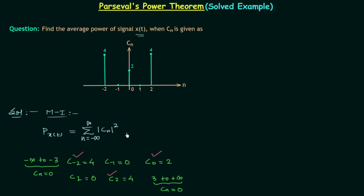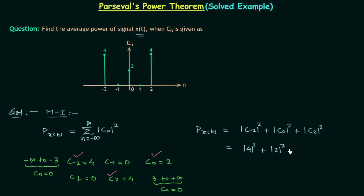Using the Parseval's theorem formula, the average power of x(t) equals |c_{-2}|² + |c_0|² + |c_2|². Since c_{-2} = 4, c_0 = 2, and c_2 = 4, we have |4|² + |2|² + |4|² = 16 + 4 + 16 = 36 watts. This is the average power calculated using Parseval's power theorem.